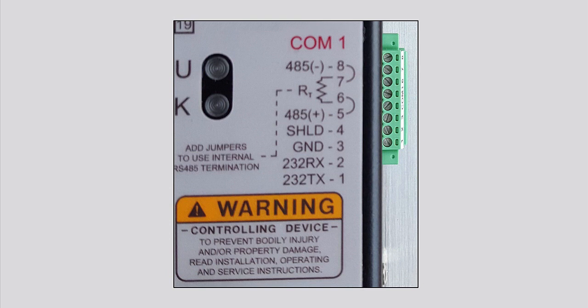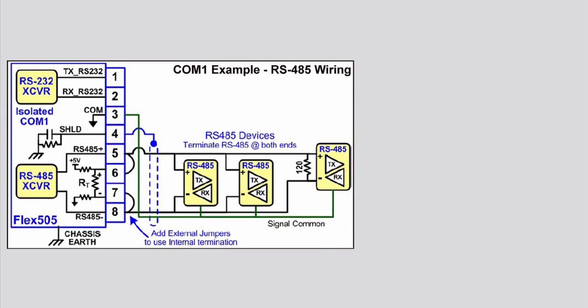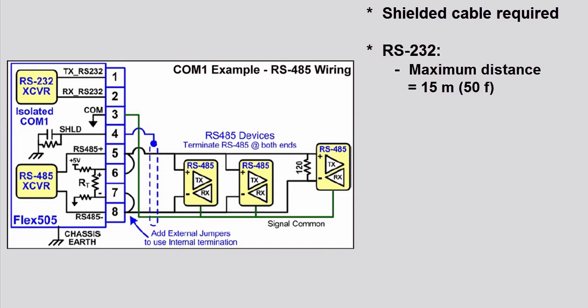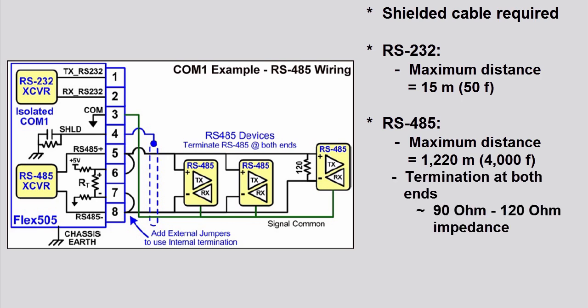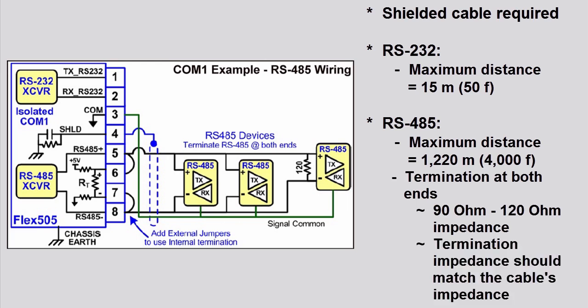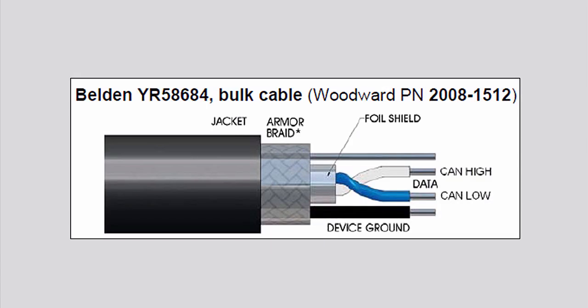The third available communication type is the serial port. An isolated RS-232 or RS-485 serial port is available for customer use. A shielded cable is required when using this port. Maximum distance for the RS-232 is 15 meters or 50 feet. Maximum distance for the RS-485 is 1,220 meters or 4,000 feet. RS-485 networks require termination at both ends with approximately 90 to 120 ohm impedance that matches the characteristic impedance of the cable used. The same cable used for CAN connections is recommended for serial connections.